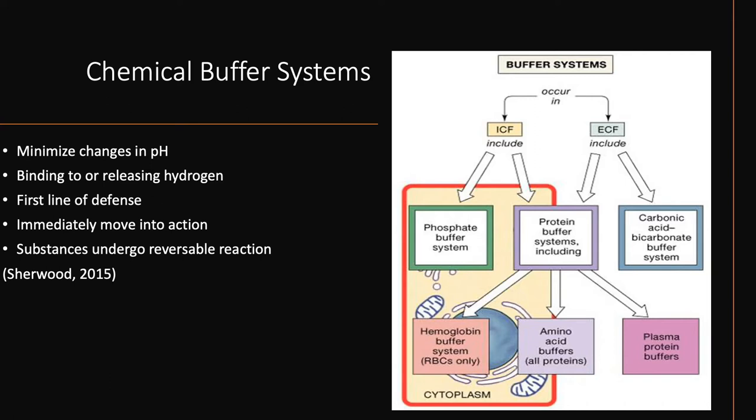These systems consist of a pair of substances that can undergo a reversible reaction. What this means is that when the reaction moves in one direction, one substance can yield a hydrogen ion, and in the other direction, another substance can bind to any free-floating hydrogen ions.